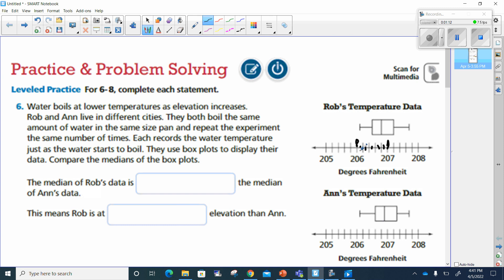Now I see over here, Rob's is lined up right here, right? And Ann's is lined up right here. Okay, which means Rob's is 0.1 lower. Okay, the median of Rob's data is 0.1 lower than the median of Ann's data.